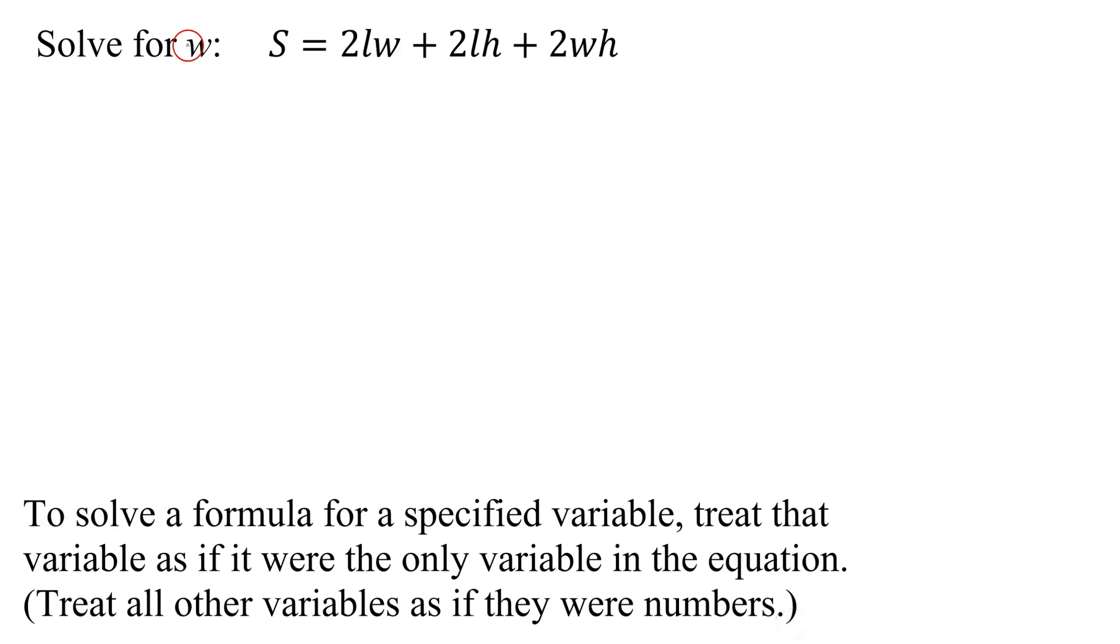So remember, I'm looking for W. That is the variable of interest. How many times does it occur in this equation? It occurs twice. So I need to collect those terms on one side of the equation, so I'm just going to leave them on the right-hand side, and I'm going to move all other terms to the other side.